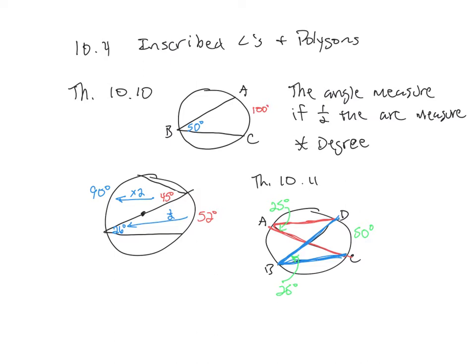You can kind of ignore this theorem if you use Theorem 10.10 — the angle is half the arc — because you'd know both angles are the same anyway. Where this theorem matters more is when you don't know the number and need to state what's congruent. Angles D and C would also be congruent if they intercept the same arc A and B.